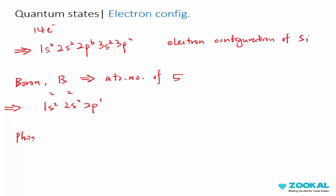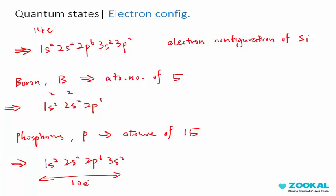How about phosphorus? Phosphorus is P and it has an atomic number of 15. How do you write the electron configuration? You have 1S2, 2S2, 2P6, 3S2. Here you have 10 electrons, but you need 5 more. So 3P, P can hold 6 electrons, but you have only 15, so 3P5. This is how you write down the electron configuration of various elements.